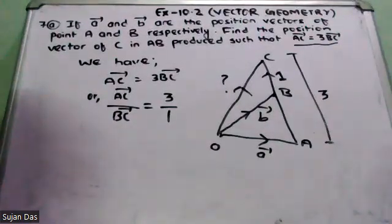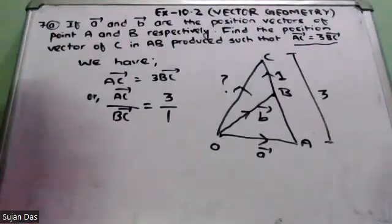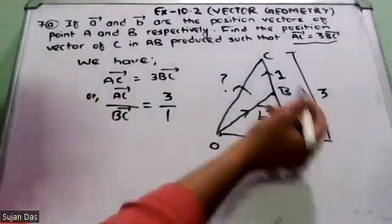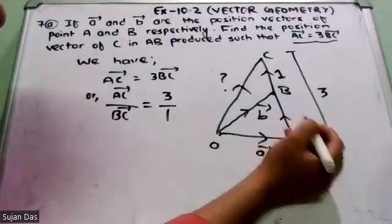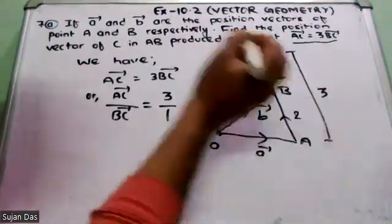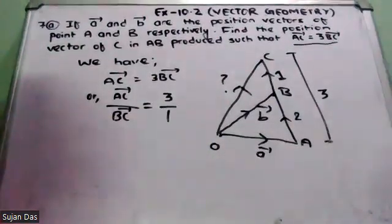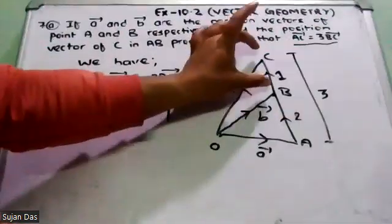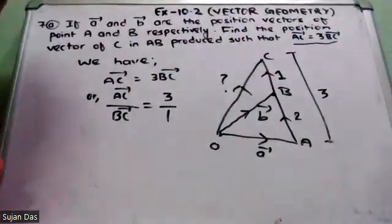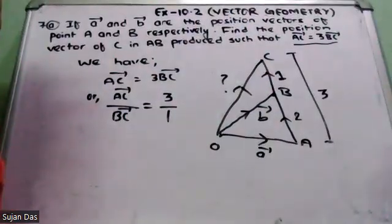What is AC1? AC1 equals 3, BC1 equals 1. So AB1 equals 3 minus 1 equals 2. So AC1 equals 3, BC1 equals 2. This gives AC1 equals 2, so AC2 equals 2.